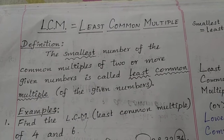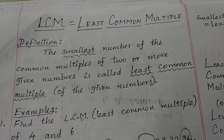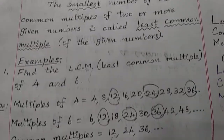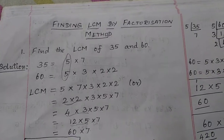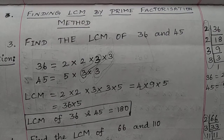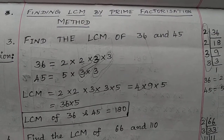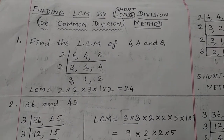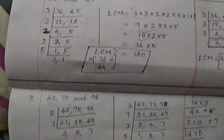In this video, we have learnt about the definition of least common multiple, finding LCM using the common multiples method, finding LCM by the factorization method, finding LCM by the prime factorization method, and finding LCM by the shortcut method or short division method.